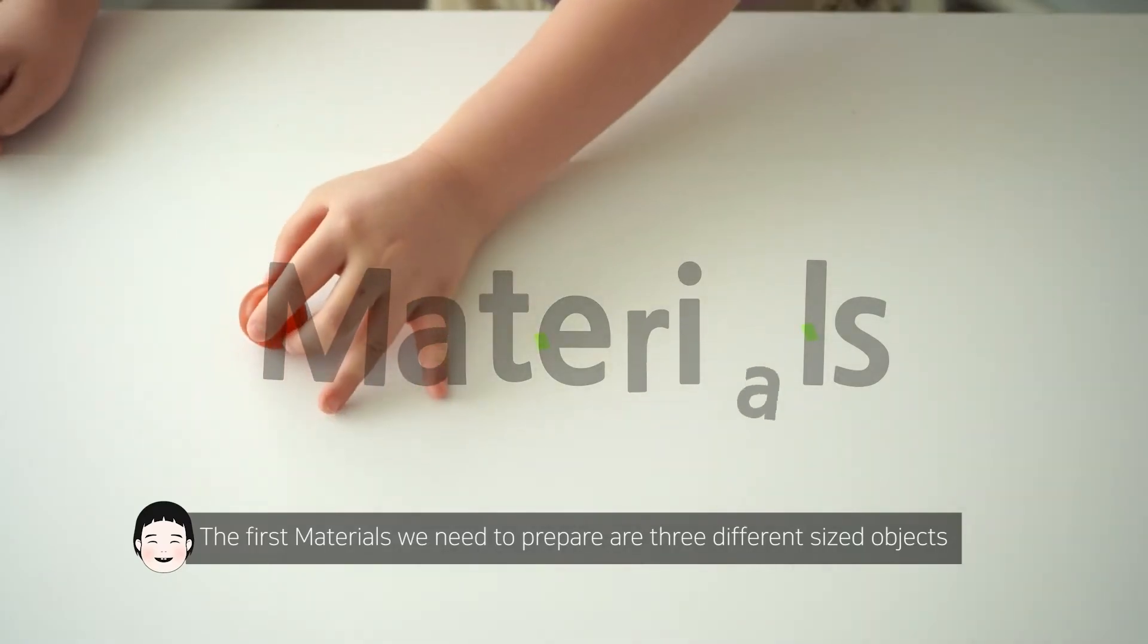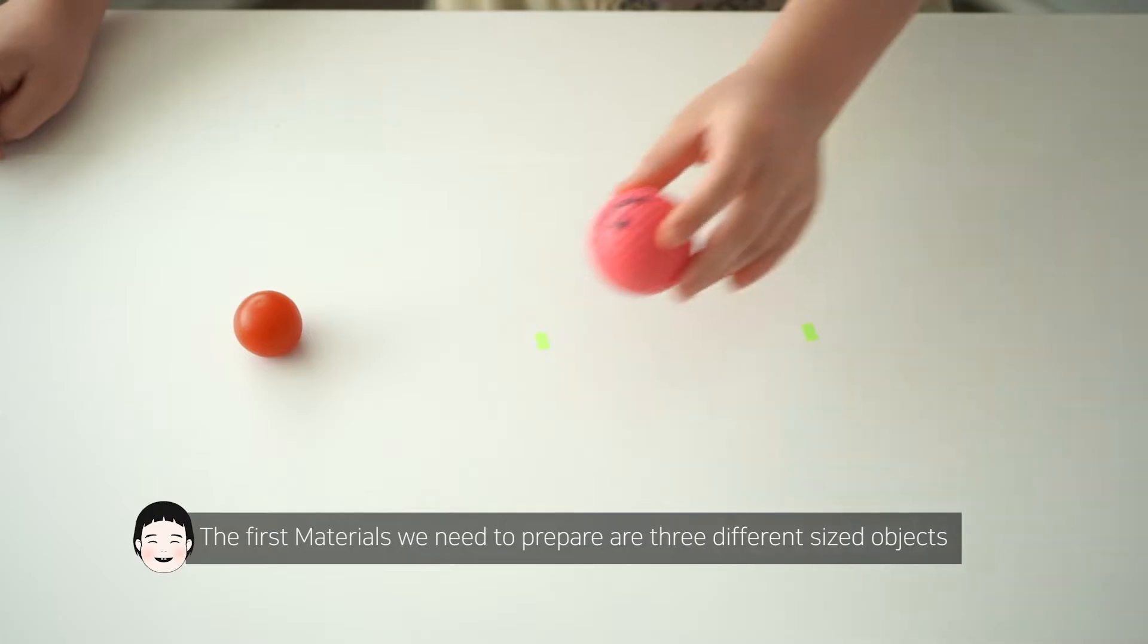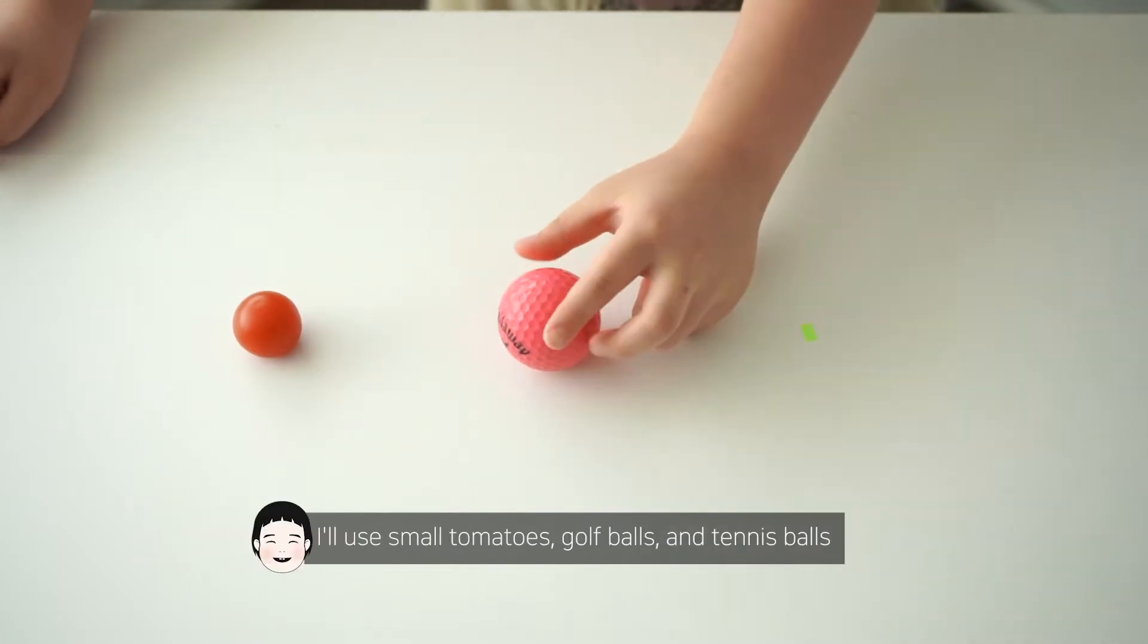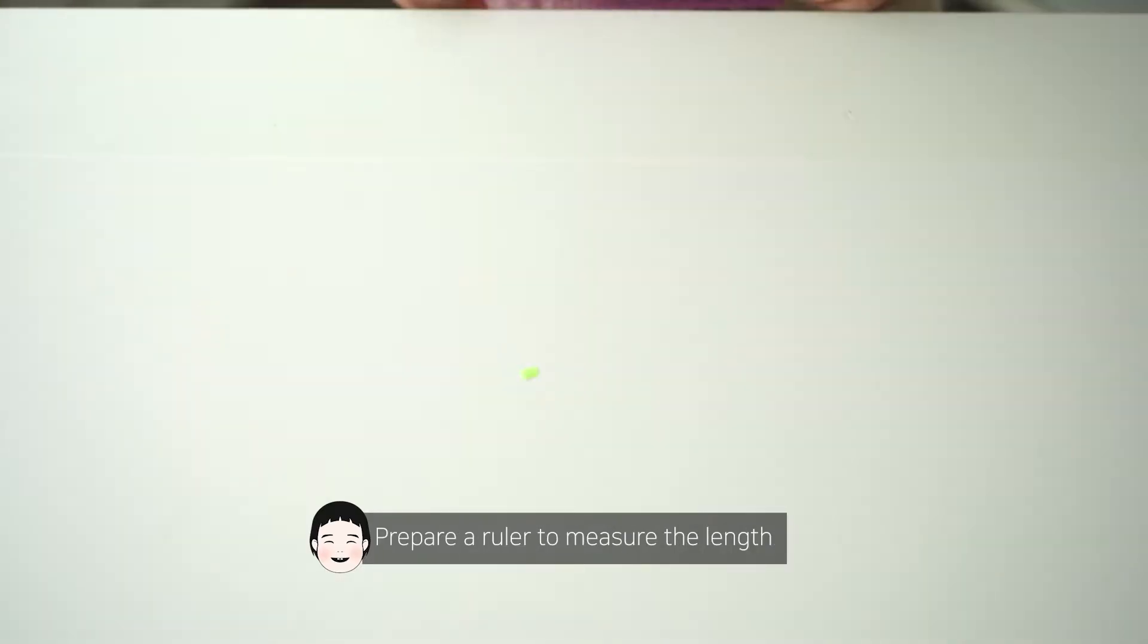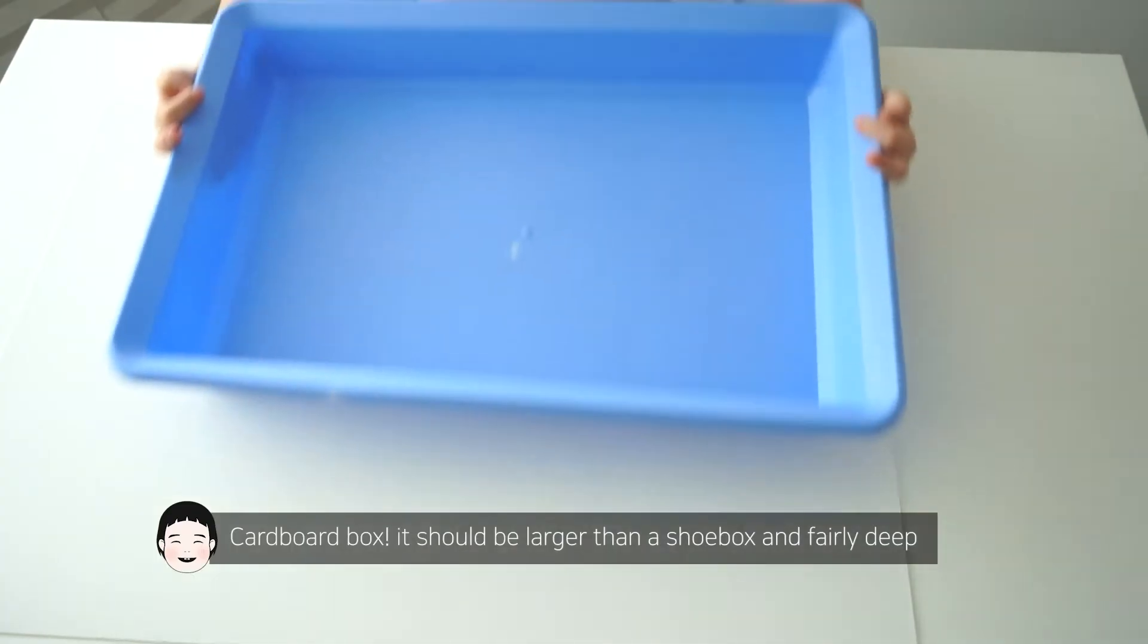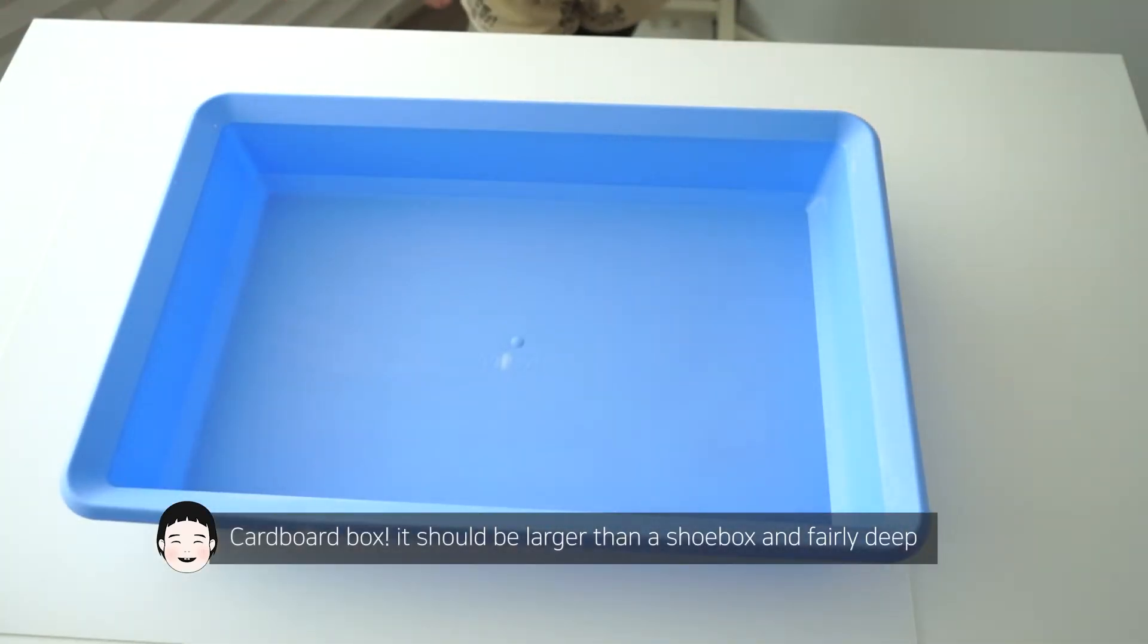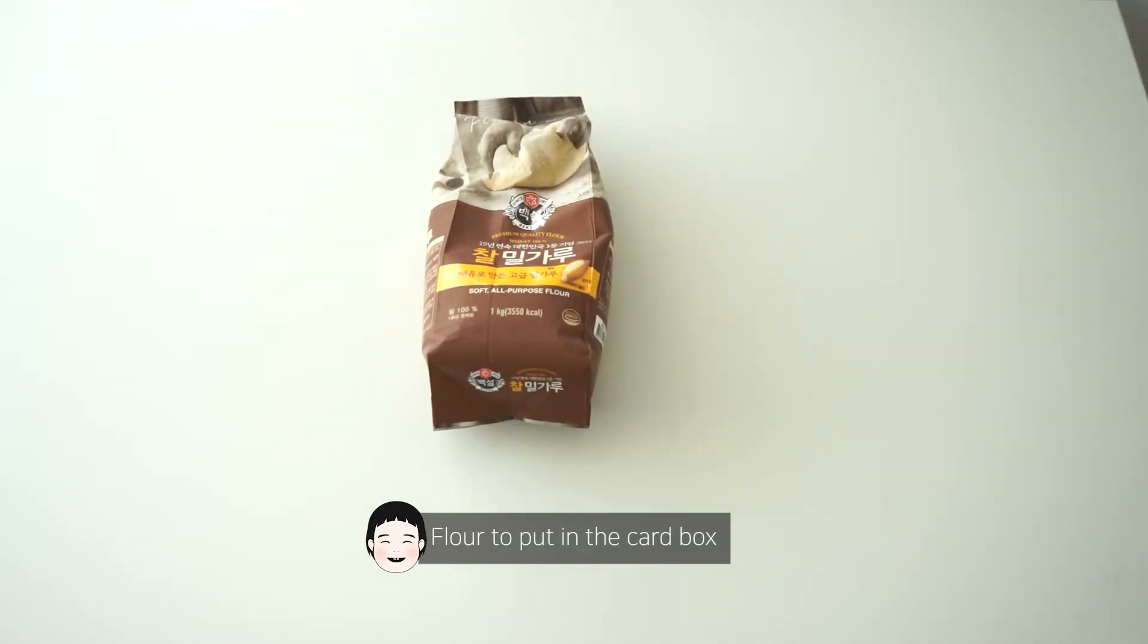The first materials we need to prepare are three different size objects. I'll use a small potato, a golf ball, and a tennis ball. Prepare a ruler to measure the length, a cardboard box larger than a shoe box, flour to put in the cardboard box, and cocoa powder.